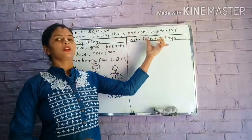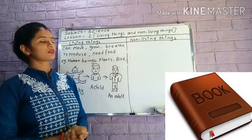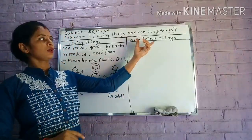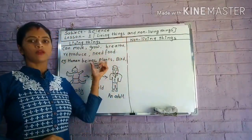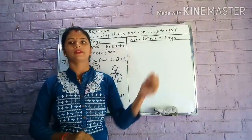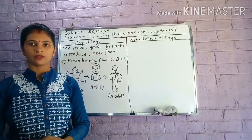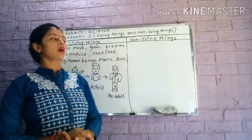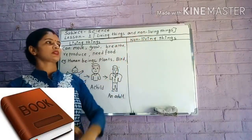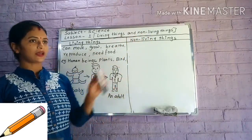Now, it's time for non-living things. Student, you need to understand the meaning of non-living things. Non-living things is the opposite of living things. Non-living things are not alive. They do not have life in them. Those things which do not have life in them are called non-living things.